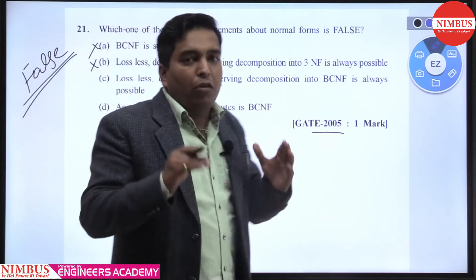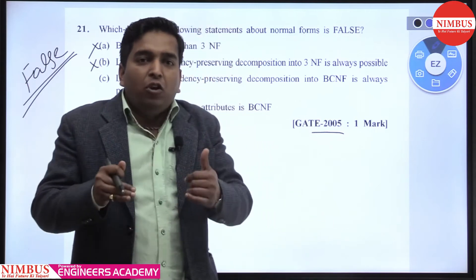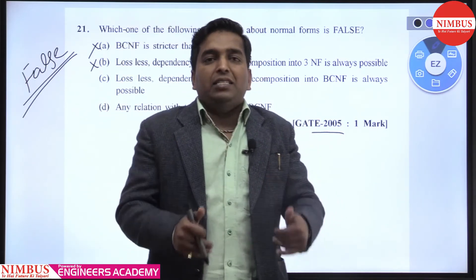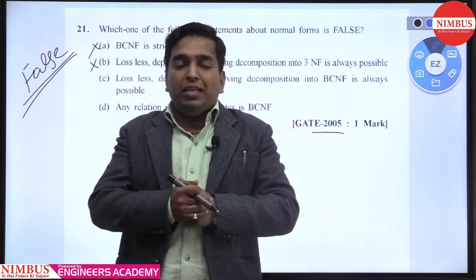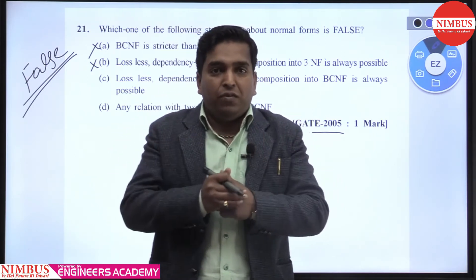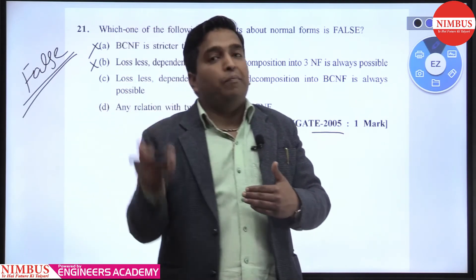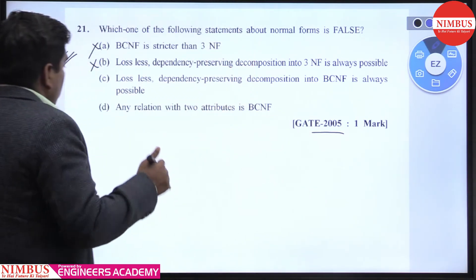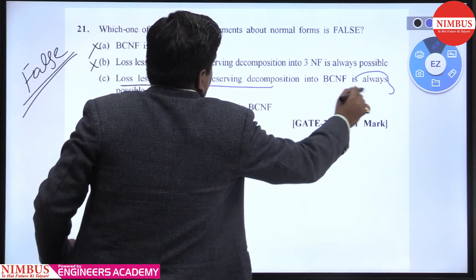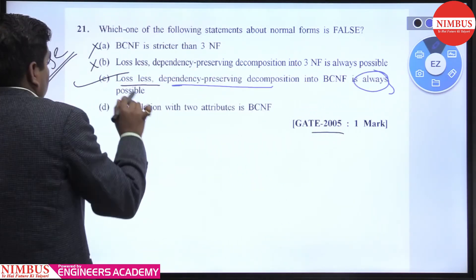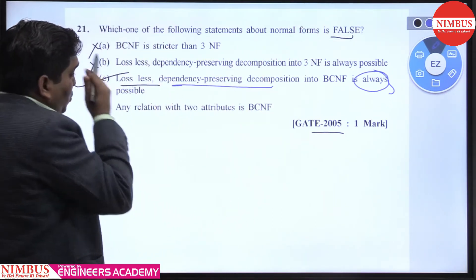Up to 3NF, both lossless join and dependency preservation are guaranteed. But in BCNF, lossless join must hold, however dependency preservation may or may not hold. So you cannot say dependencies are always preserved in BCNF. Therefore, the statement 'lossless join and dependency-preserving decomposition in BCNF is always possible' is false.